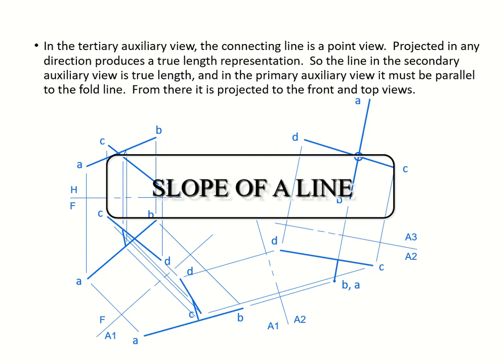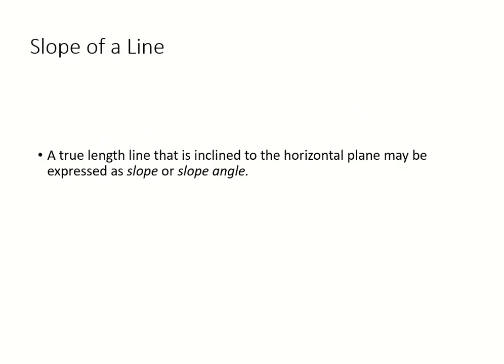Then we'll get into the slope of a line. So a true line that's inclined to your horizontal plane may be expressed as a slope or slope angle. Horizontal plane is your top view.